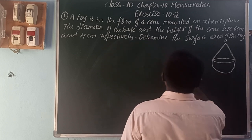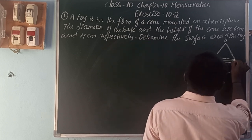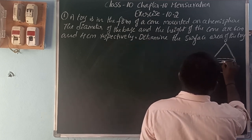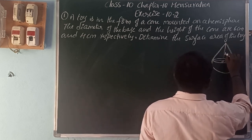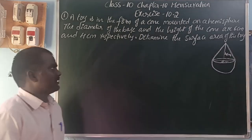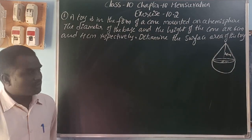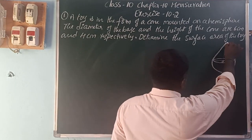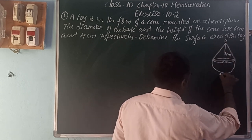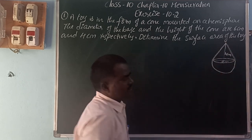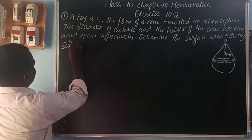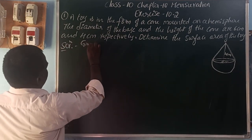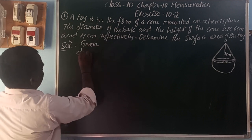So here what the question says: a toy is in the form of a cone mounted on a hemisphere. The diameter of the base is 6 centimeters and height of the cone is 4 centimeters. So what do we need to find? The surface area of the toy. Here you can find the surface area of the cone and curved surface area of hemisphere.